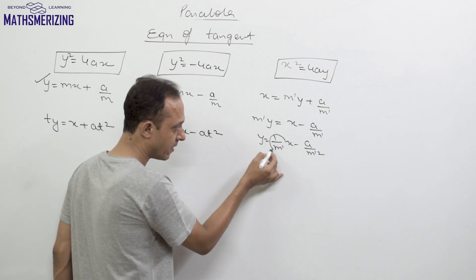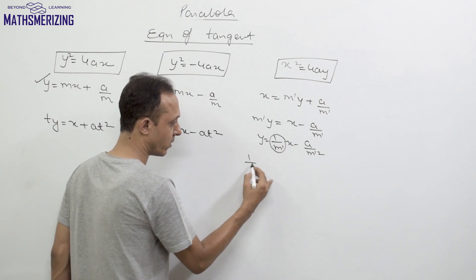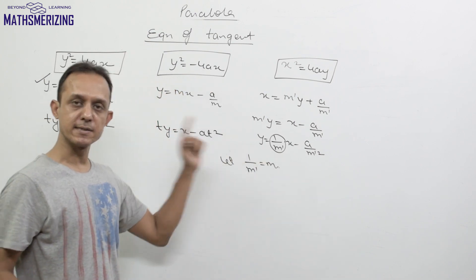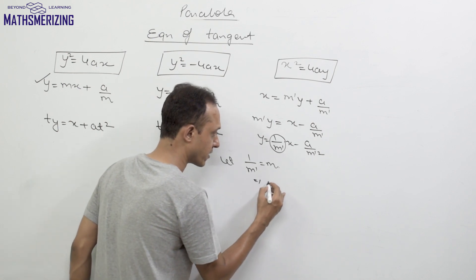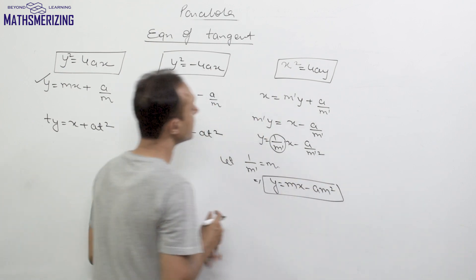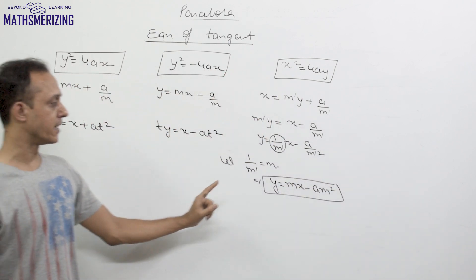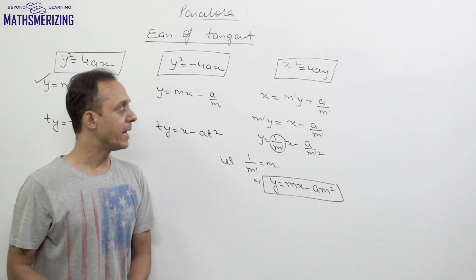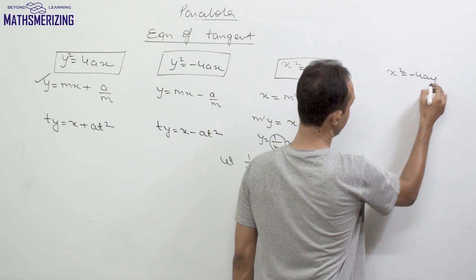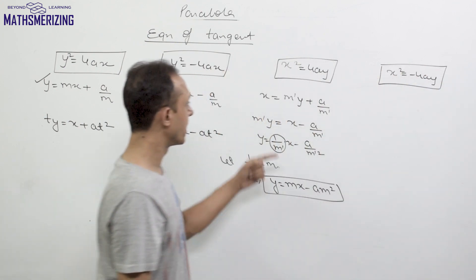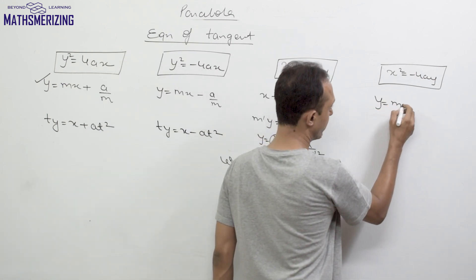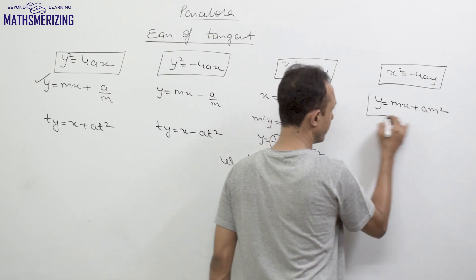The slope of this tangent is 1/m'. Letting 1/m' = m, we can write the equation of tangent as y = mx - am². So for the third form, the equation of tangent is y = mx - am². For the fourth form x² = -4ay, we replace a with -a, giving y = mx + am².